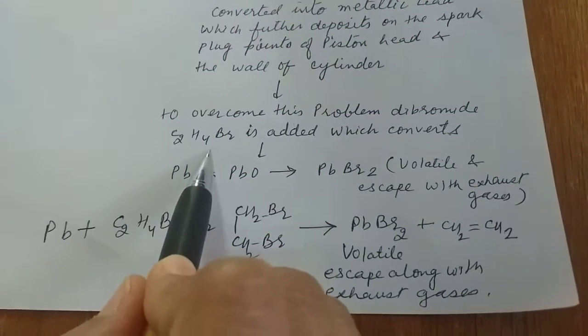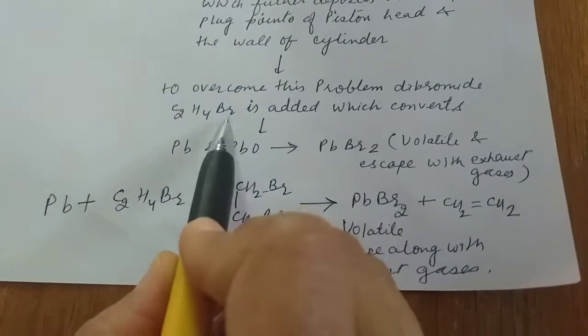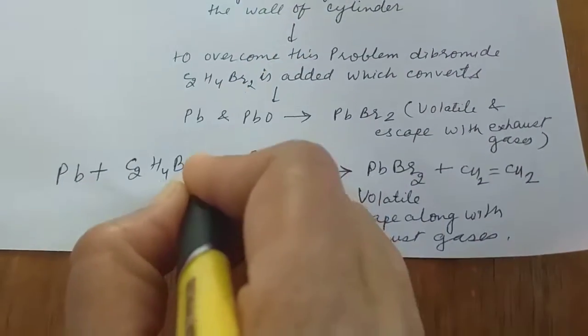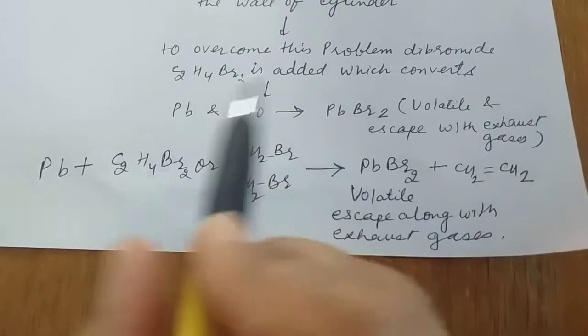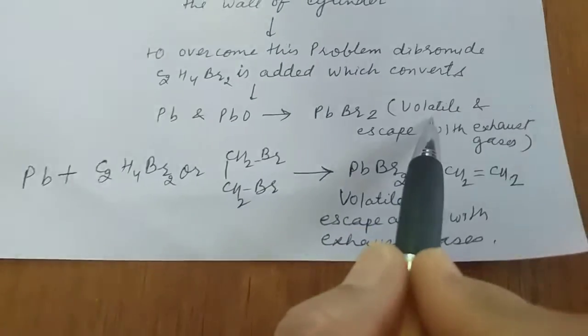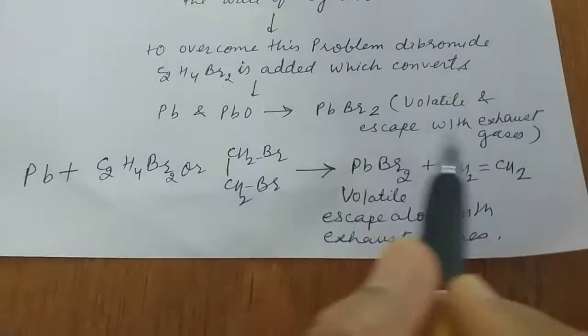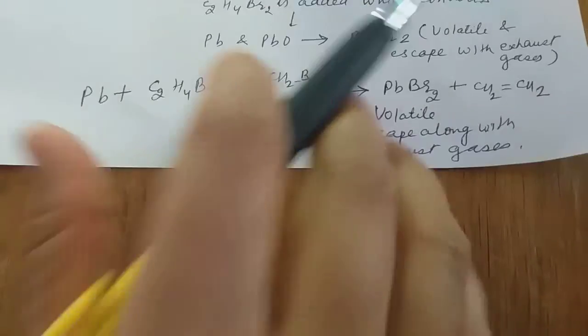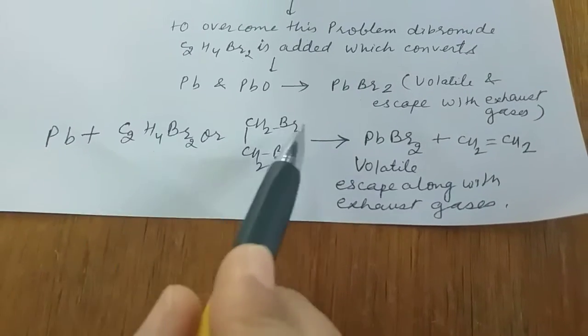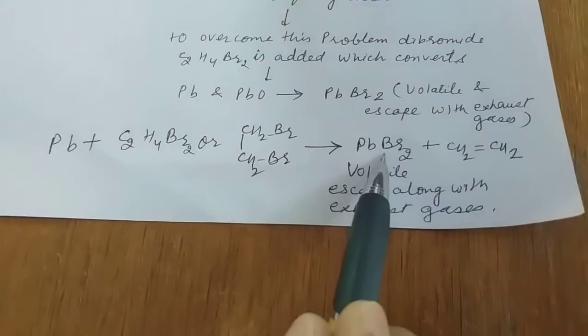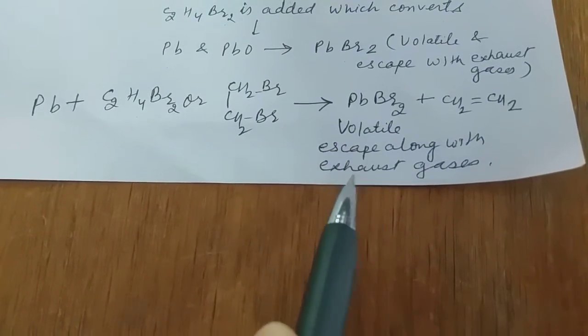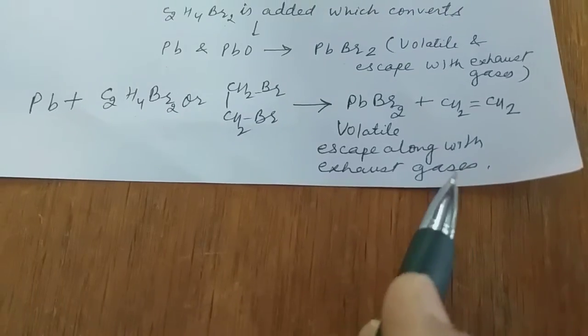To overcome this problem, C2H4Br2 (diethyl dibromide) is added, which converts lead and lead oxide into PBBr2 (lead bromide), which is volatile and escapes with exhaust gases. The reaction is: lead and lead oxide react with diethyl bromide and form PBBr2. This PBBr2 compound is volatile in nature and escapes with the exhaust gases. Thank you.